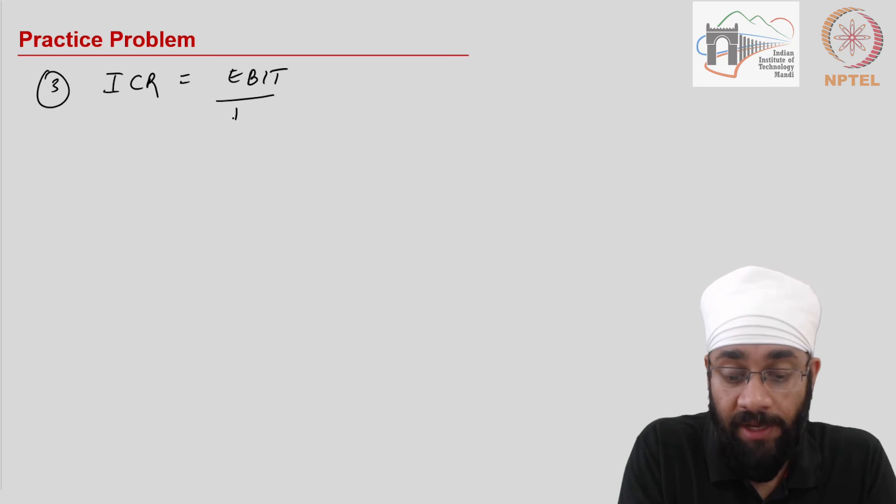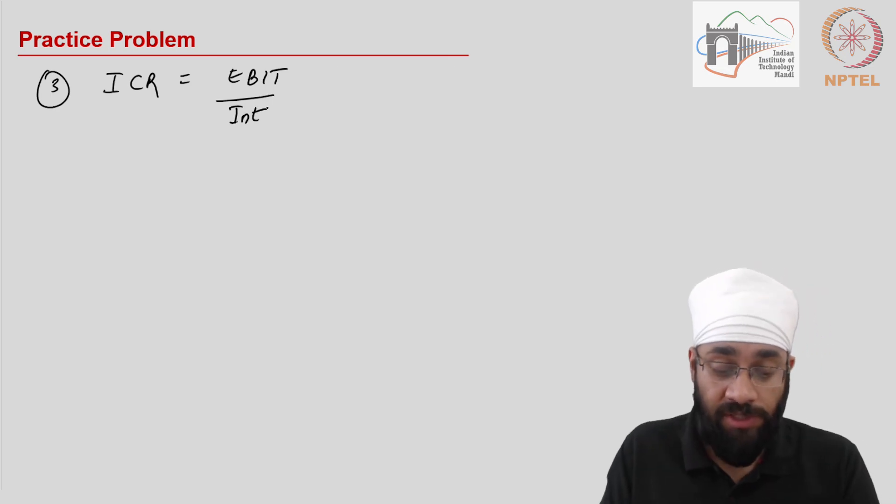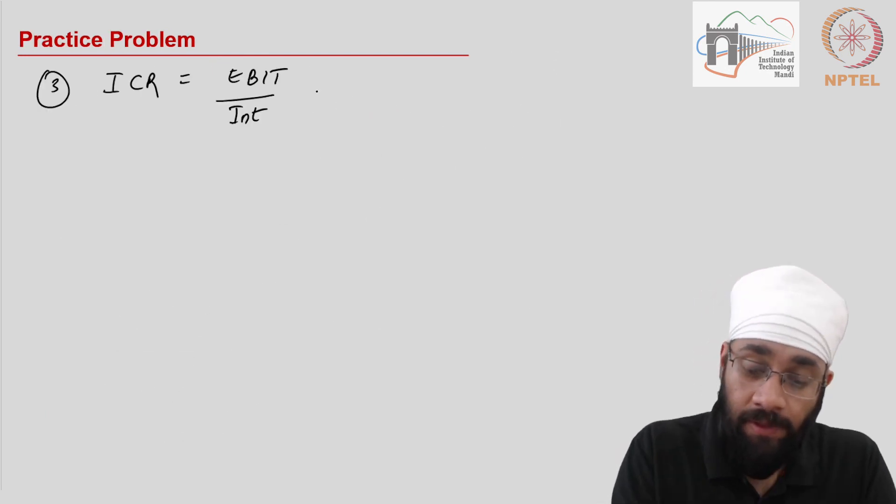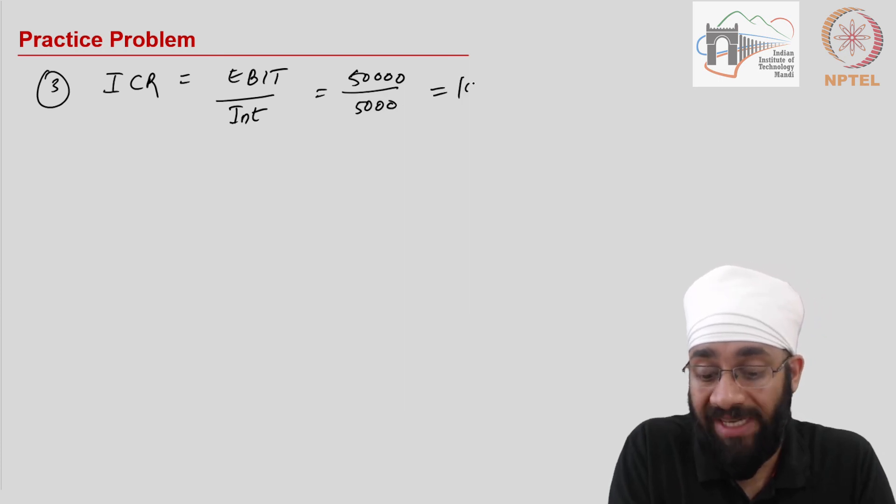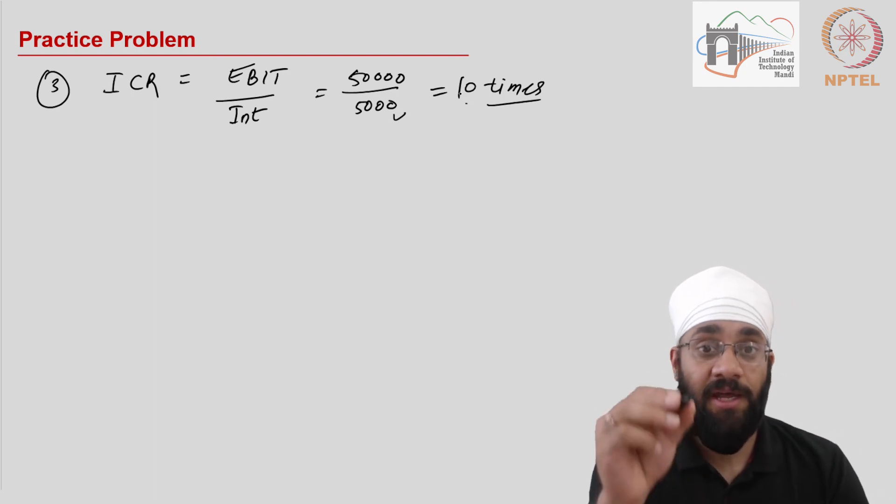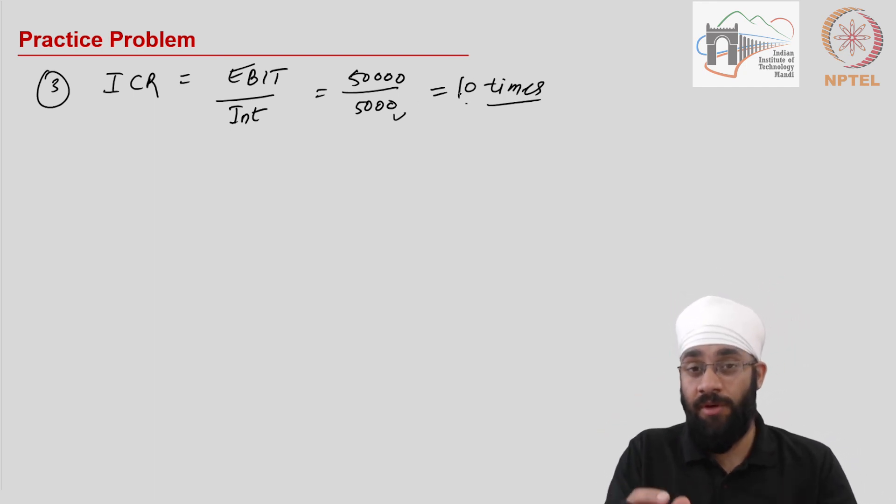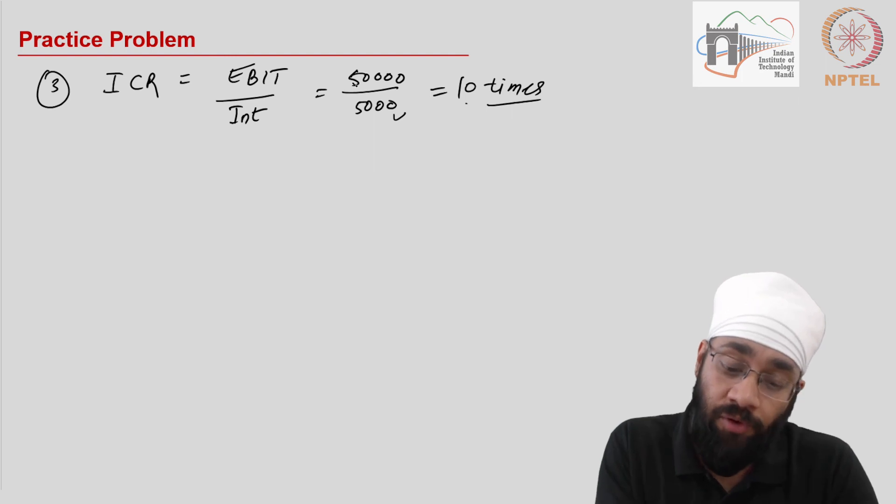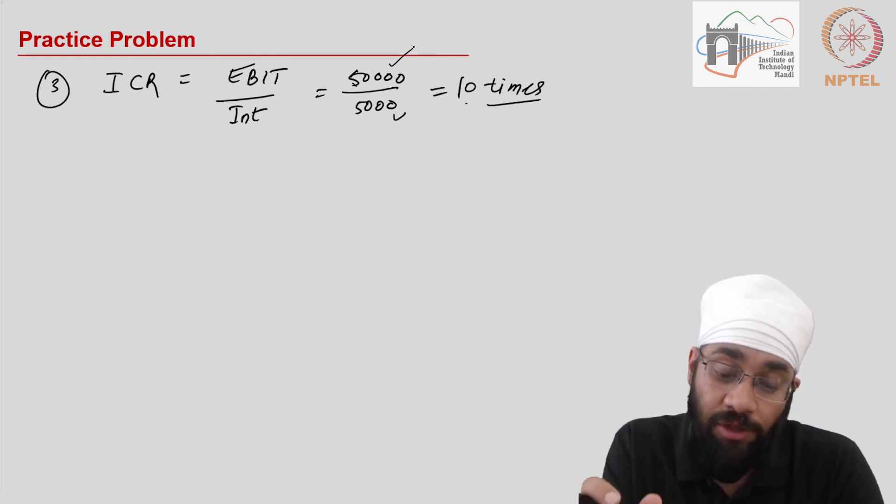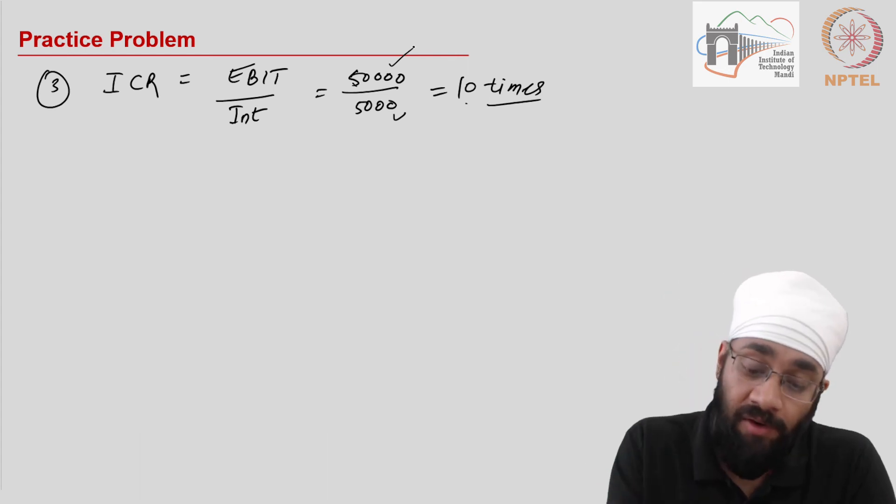Finally, we have the interest coverage ratio, which is earning before interest and tax divided by the interest amount which has to be paid. The numbers are 50,000 and 5,000. 50,000 divided by 5,000 gives you 10, and the units are times. This means you have earnings using which you could pay this interest 10 times over if required, which is a very good position to be in. You can afford to lose a lot of earnings—one ninth of the earnings for example—and the tenth part will still be able to pay off your interest.